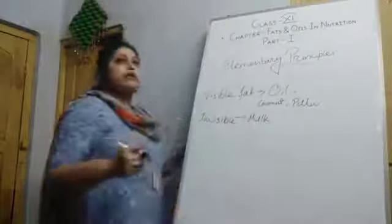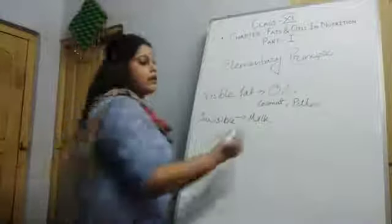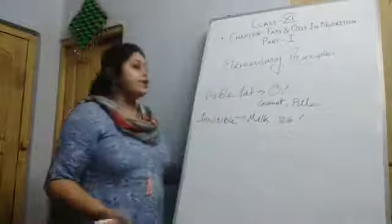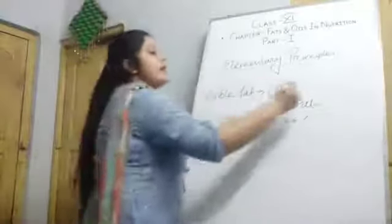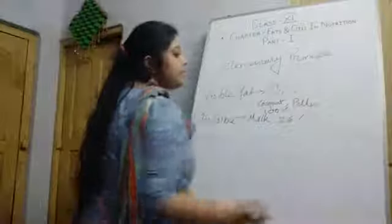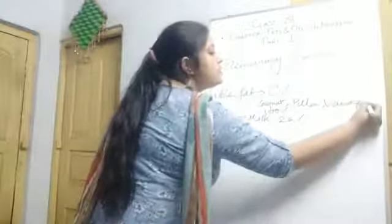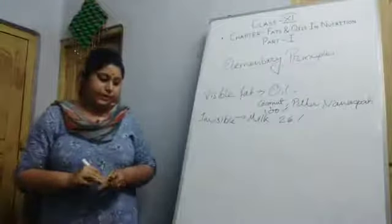In milk, near about in the powder milk, near about 26% fat can be seen. Or in any oil like this coconut oil, there are 100% of fat. Or can be also vanaspati. Vanaspati also rich source of the visible fat.